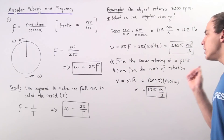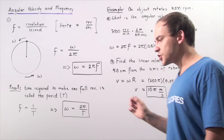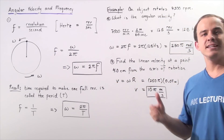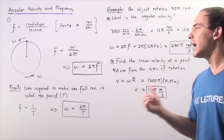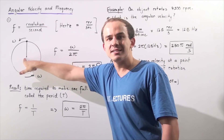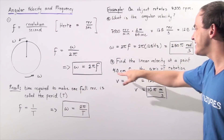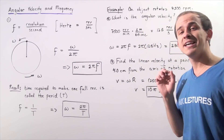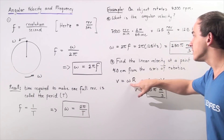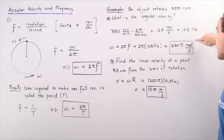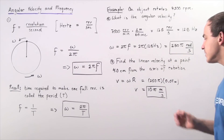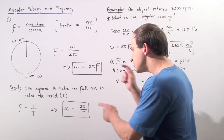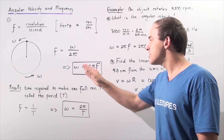In part B we use the formula relating linear velocity and angular velocity: linear velocity equals angular velocity multiplied by the radius from the point to the axis of rotation. The radius is 4 centimeters, which we convert to 0.04 meters. So 250 pi radians per second multiplied by 0.04 meters gives us a linear velocity of 10 pi meters per second.